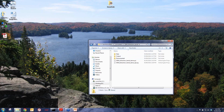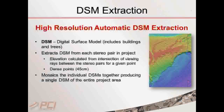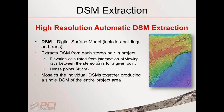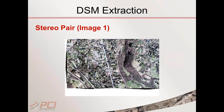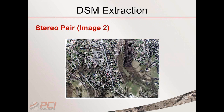Before we get going, I want to introduce some new concepts. We want to automatically extract a digital surface model — an elevation model that includes buildings, trees, and surface features. Ultimately, we need to remove those surface features to create our DTM. A lot of work has gone into OrthoEngine in terms of how we extract digital surface models. This concept applies to both aerial and satellite data. You can select your entire dataset and perform DSM extraction on all images at once with our automatic batch processing.